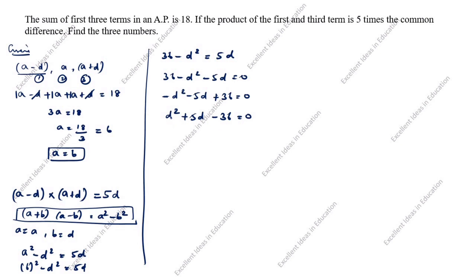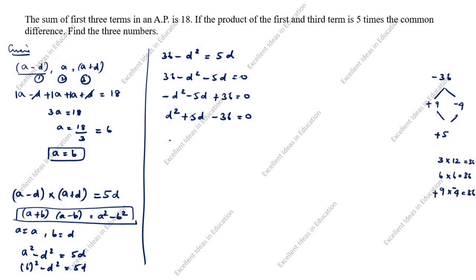Now we will split the middle term. How do we split this? We need two numbers whose product is minus 36 and whose sum is plus 5. We try 9 and minus 4: plus 9 into minus 4 is minus 36, and plus 9 minus 4 is plus 5. So we get: D square plus 9D minus 4D minus 36 equals 0.